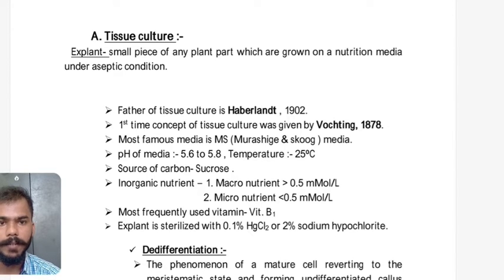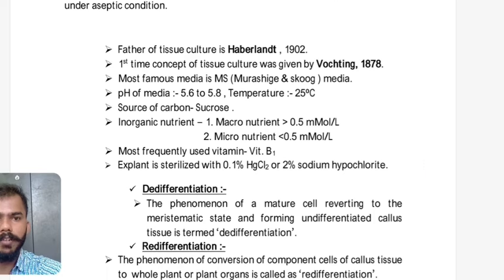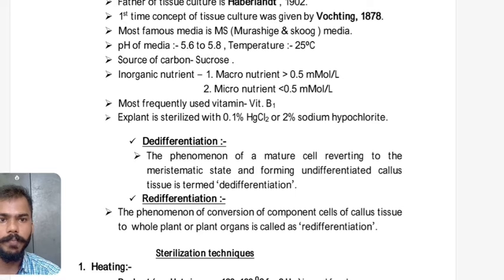Inorganic nutrients in tissue culture media are categorized as macronutrients or micronutrients based on concentration. If the concentration of a nutrient is more than 0.5 millimolar per liter, it is a macronutrient; less than 0.5 millimolar per liter is a micronutrient. The most frequently used vitamin in nutrient media is Vitamin B1. The explant is sterilized with 0.1% HgCl₂ (mercury chloride), 2% sodium hypochlorite, or up to 9–10% calcium hypochlorite.